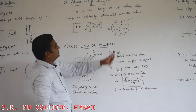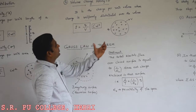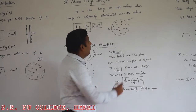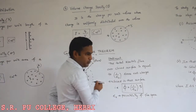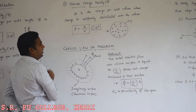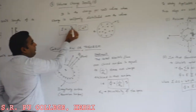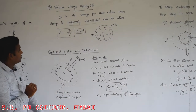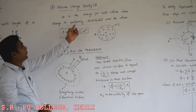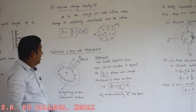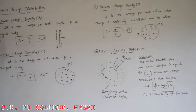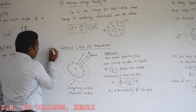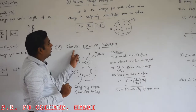We can understand volume charge density using this diagram. We consider a spherical conductor that encloses a charge Q over the surface, and the volume of that spherical conductor is denoted as V. So volume charge density equals Q divided by V, that is total charge per unit volume. The important condition here is that the charge must be uniformly distributed over the volume.